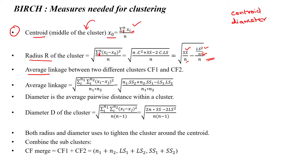The average linkage has to be calculated between two cluster features. That will be done by using the summation from i equal to 1 to n1 and j equal to 1 to n2 of (xi minus xj) whole square, divided by the number of data points in cluster 1 multiplied by the number of data points in cluster 2. This will be applied based upon the squared sum and linear sum that we will see in the next slide.